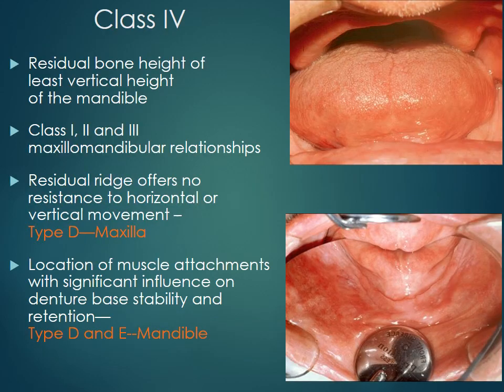In Class 4, the residual bone height is measured at the least vertical height of the mandible. The maxillomandibular relation may be Class 1, 2, or 3. The residual ridge offers no resistance to horizontal or vertical movement, which is Type D of the maxilla. Location of muscle attachments with significant influence on denture base stability and retention is Type D and E of the mandible.